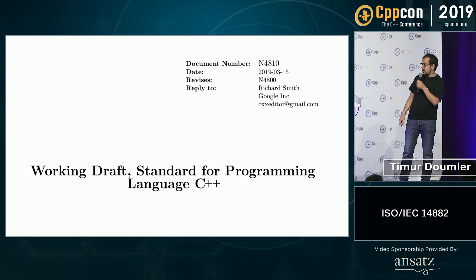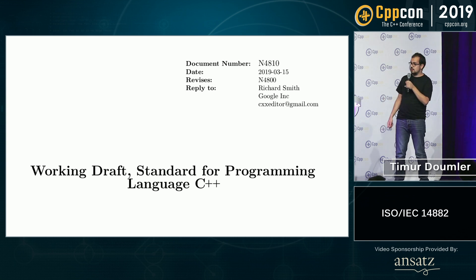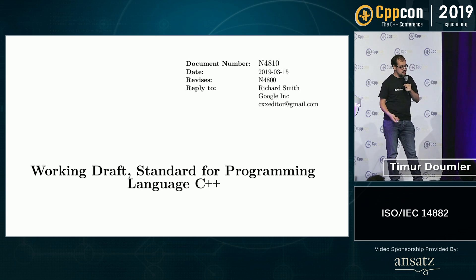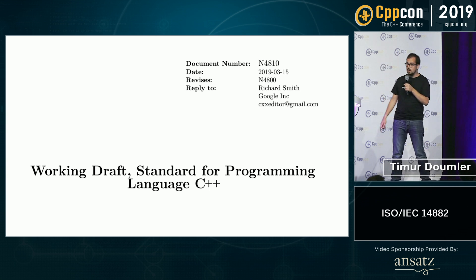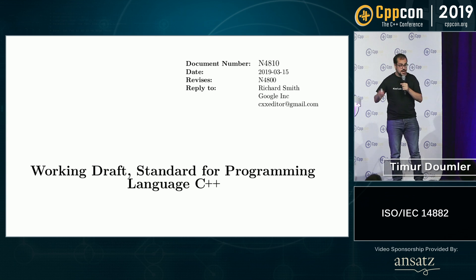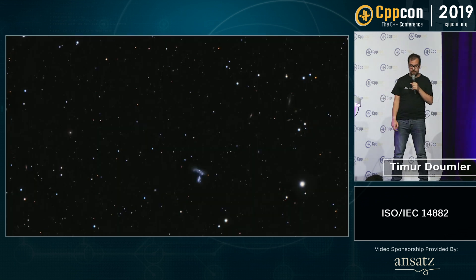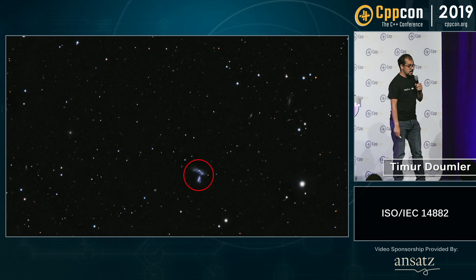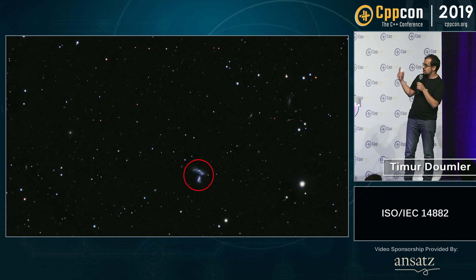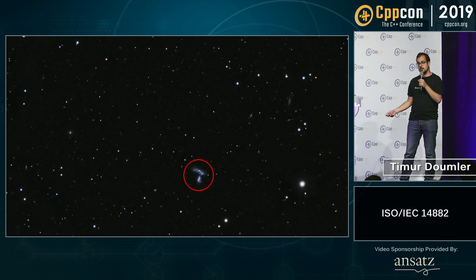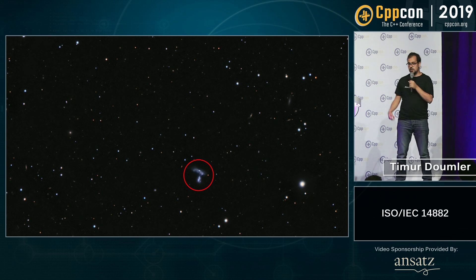So instead we're going to talk about N4810, which is pretty much the same except it's the draft, so it has all the new C++20 stuff in it. Also, N4810 actually is the name of a galaxy. If you go back to the title slide, you see these two little galaxies — an interacting galaxy pair. N4811 is the top one, and N4810 is the bottom one. But of course, we're here to discuss C++.